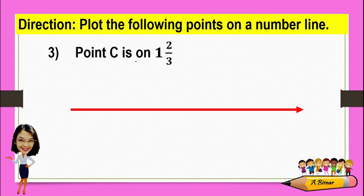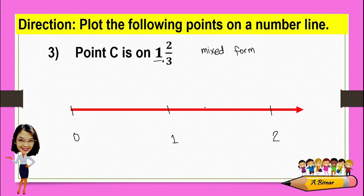Point C is on one and two-thirds. As you observe, it is in mixed fraction, or in mixed form. This means that one and two-thirds is between one and two. Now, the denominator is three, so we will divide this by three. And since the numerator is two, we'll get two out of three. So this is one-third, two-thirds,